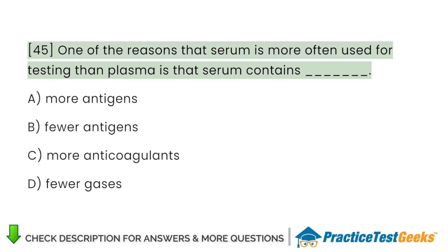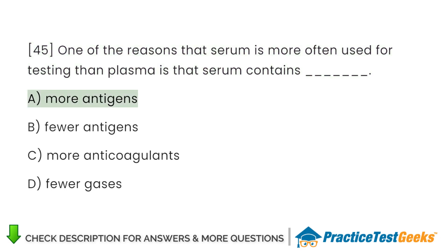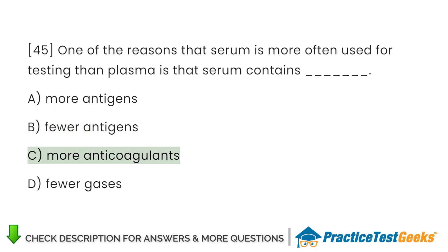One of the reasons that serum is more often used for testing than plasma is that serum contains A. More antigens. B. Fewer antigens. C. More anticoagulants. D. Fewer gases.